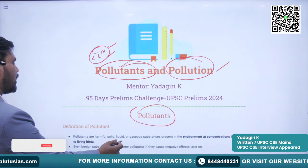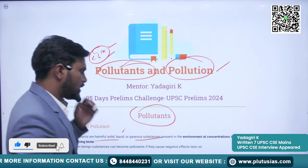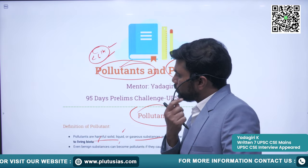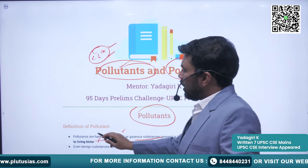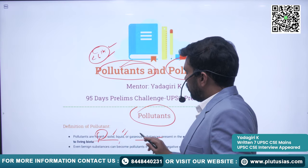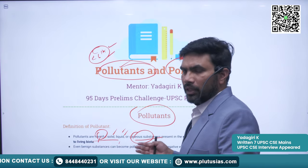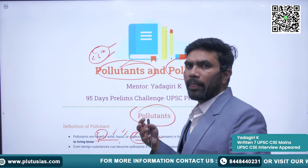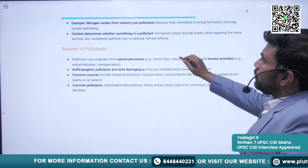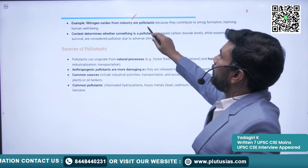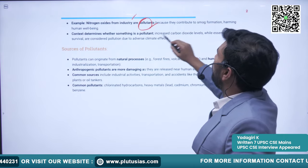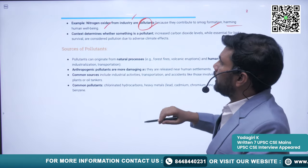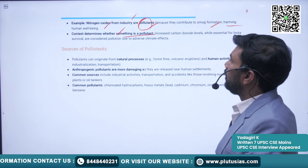Pollutants are harmful solid, liquid, and gaseous substances present in the environment at concentrations injurious to living biota. They can be in any form — solid, liquid, or gaseous — and are harmful to living organisms at certain concentrations. For example, nitrogen acids released from industry are pollutants because they contribute to smoke formation, harming human well-being.